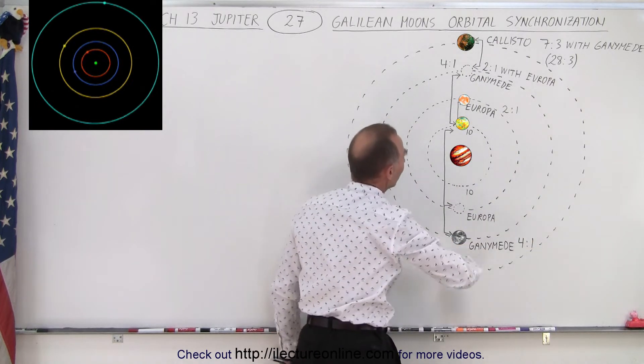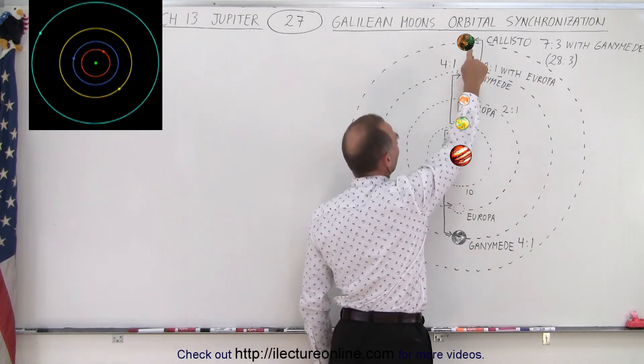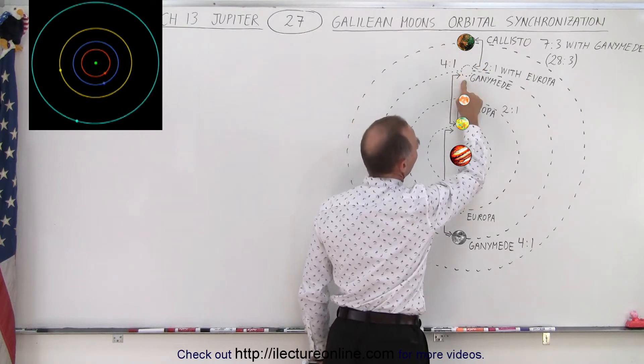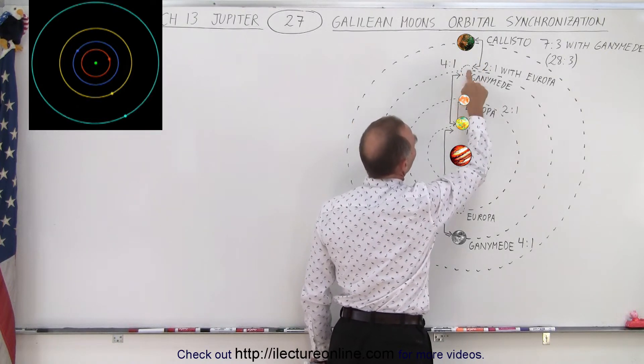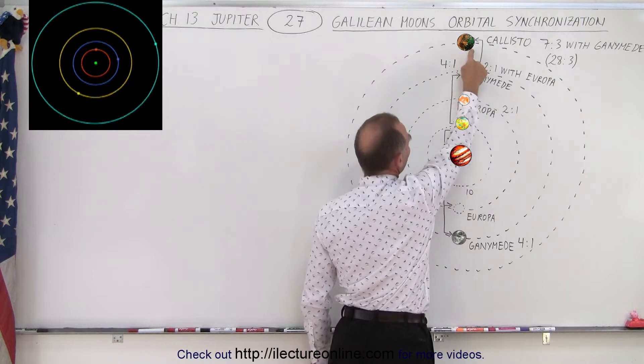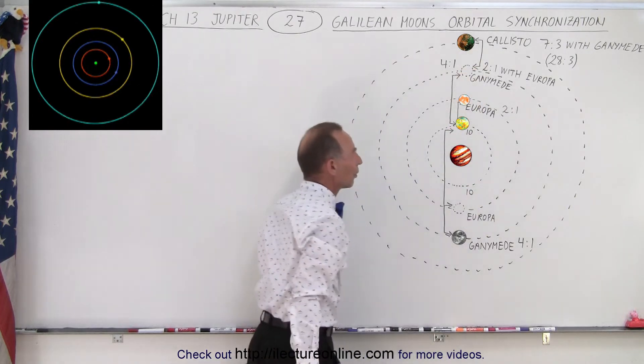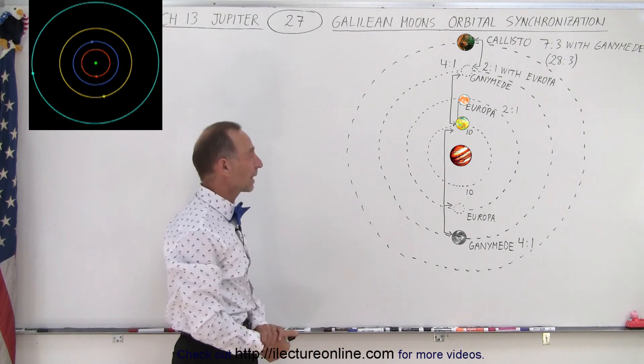So when Ganymede comes around, one point Ganymede will be over there, and Callisto will be over there. That's after three orbits of Ganymede and three orbits of Callisto and seven orbits of Ganymede. So a little bit complicated.